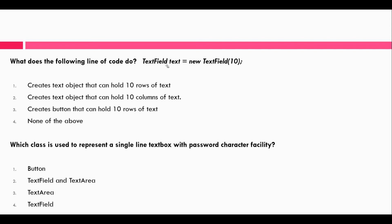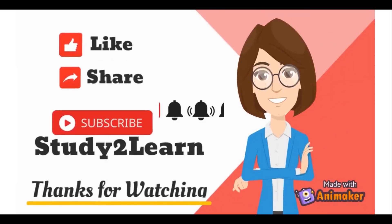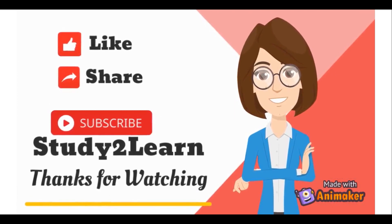Next question: what does the following line of code do — TextField text = new TextField(10)? The answer is it will create a text object that can hold 10 columns of text. Next question: which class is used to represent a single-line text box with password character facility? The answer is TextField.